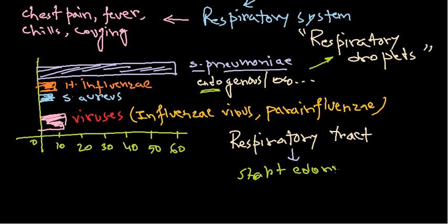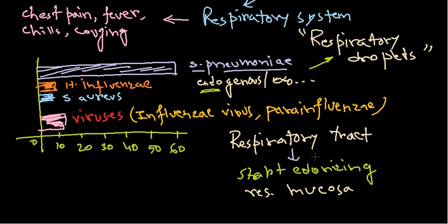After entering the respiratory tract, the bacteria start colonizing the respiratory mucosa. The respiratory mucosa is rich in immune system cells like macrophages, which are destined for pathogen degradation. Those cells start killing the bacteria, but in doing so they create damage to the mucosa and respiratory tract, causing burning sensation and pain, and triggering coughing.